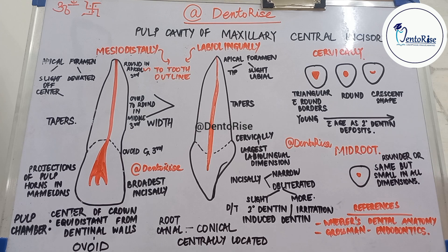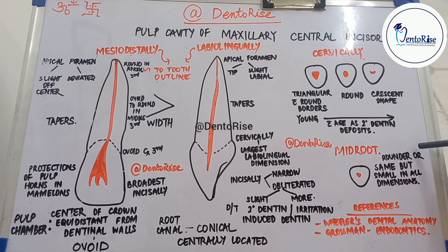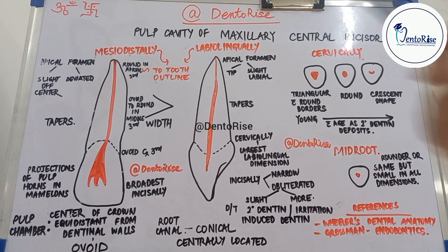At the mid-root level, the shape of the pulp canal is almost the same as that seen cervically, but it is rounder and smaller in all dimensions. This concludes the discussion of the pulp cavity of the maxillary central incisor.